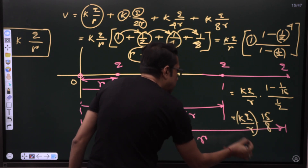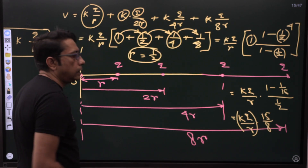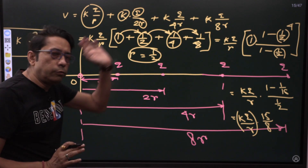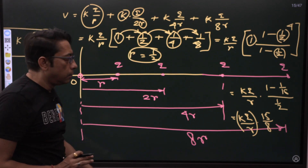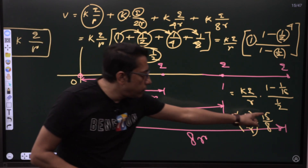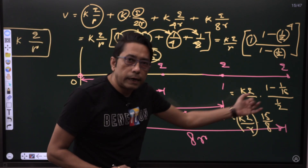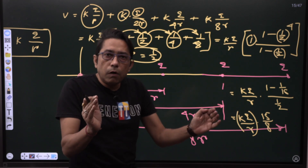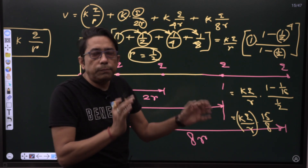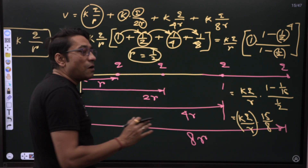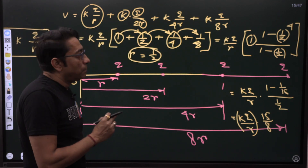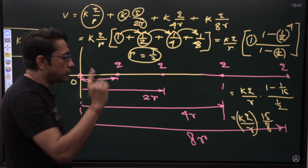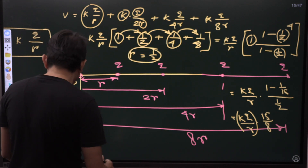The KQ/R part is the physics. We will do that later. But the 15/8 came from the sum of a GP, and that is the formula we just applied.